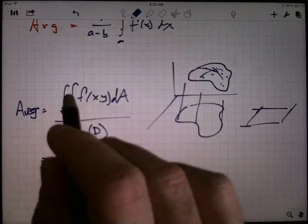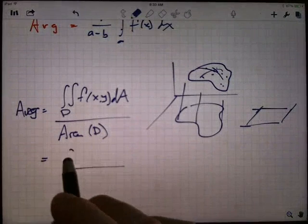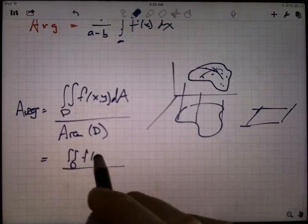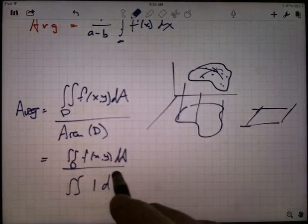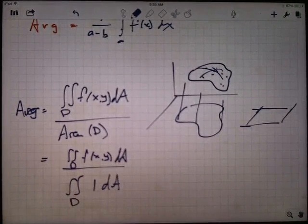You calculate the area by a double integral as well, in that, so I'm integrating over D of the function. And if I do the double integral of 1 dA, that actually just calculates the area.